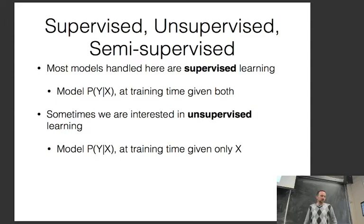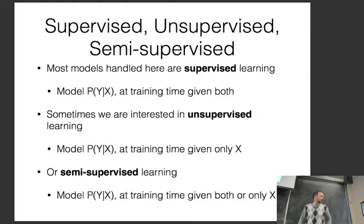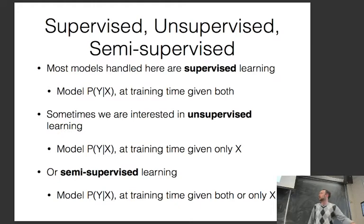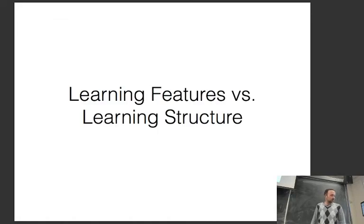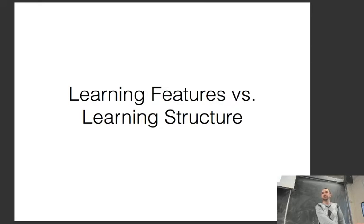In unsupervised learning we have to guess Y without any annotations. In semi-supervised learning, we model P(Y|X) and at training time we're given either both X and Y, or only X. Today I'll talk about the latter two — mostly unsupervised learning, because most unsupervised methods can be easily applied to semi-supervised learning.